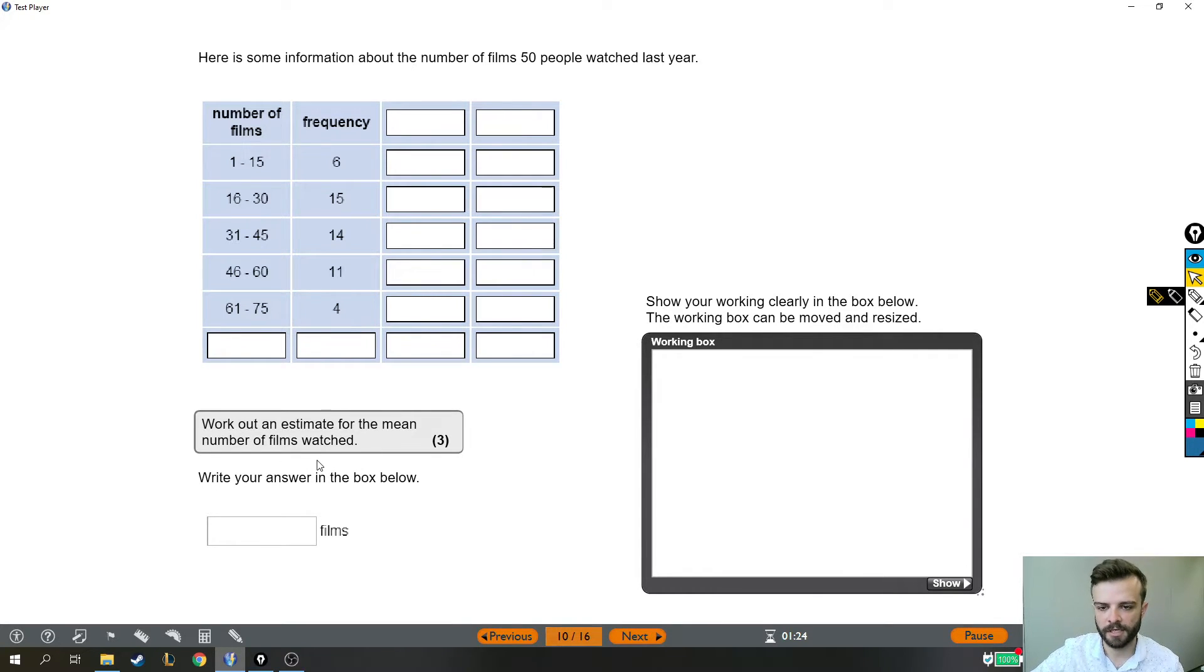Work out an estimate for the mean number of films watched. Write your answer in the box below. Now it's only 3 marks, but I suppose the maths we have to do isn't complicated, but the reason why we do it is complicated. Now generally, for the mean, we would like to find the total and then divide it by how many. Sometimes you think of it as adding up and dividing, but I want to express it instead as the total, which for us means the total number of films, divided by how many. But it's tricky. How do we find the total number of films that these people watched? Well, to do that, we are going to fill in some of this table that is deliberately left for us to remind us what we need to do.